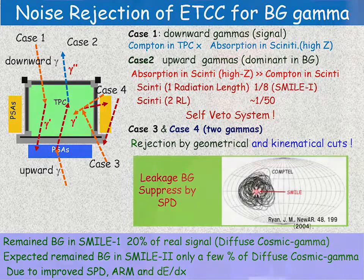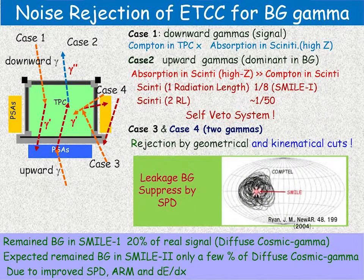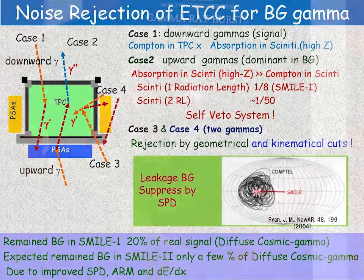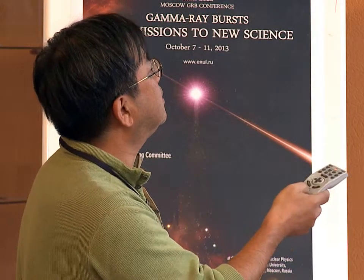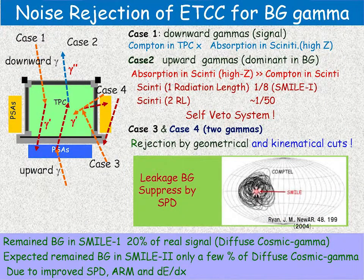Our concept uses light material — gas — in the forward detector, and quite heavy material as a backward detector. This is a quite ideal structure for rejecting backward gamma rays. Gamma rays hit heavy material and are usually absorbed in one radiation length. If we use one radiation length of scintillator, about one-tenth of gamma rays can penetrate and hit both detectors; if we use two radiation lengths, the effect is quite negligible. This expected data is quite consistent with the previous balloon experiment.